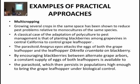By encouraging blackberries between alternative grape arbors, a constant supply of eggs of both leaf hoppers is available to the parasitoids, allowing them to persist in population numbers sufficient to bring the grape leaf hoppers under biological control.